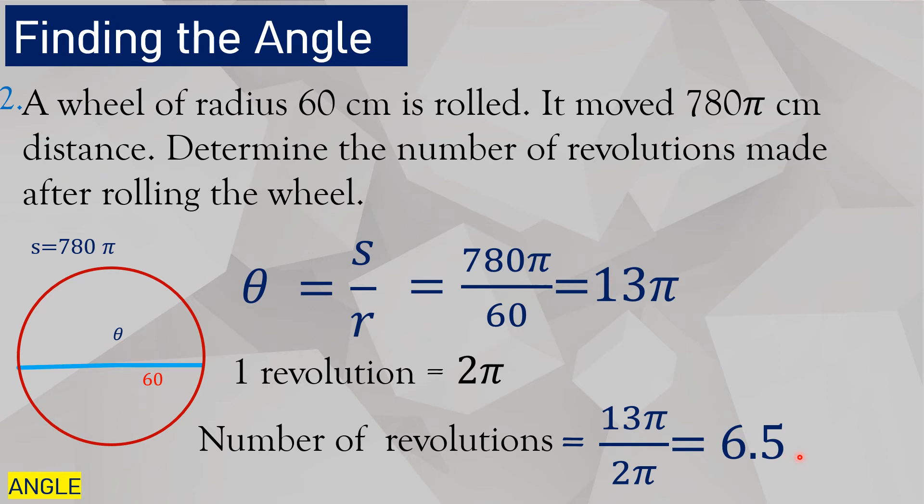So what does this mean? You are moving. Try to imagine this. You moved 6.5 revolutions. One, two, three, four, five, six, six point five. That's how far it traveled, because the wheel is rolling.